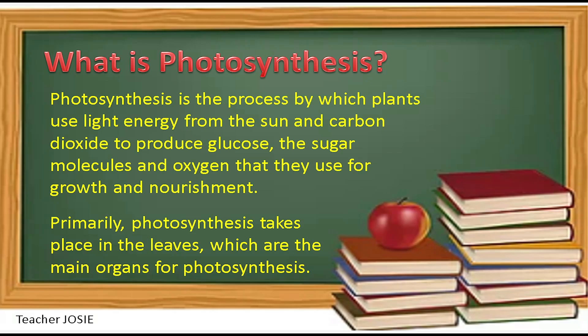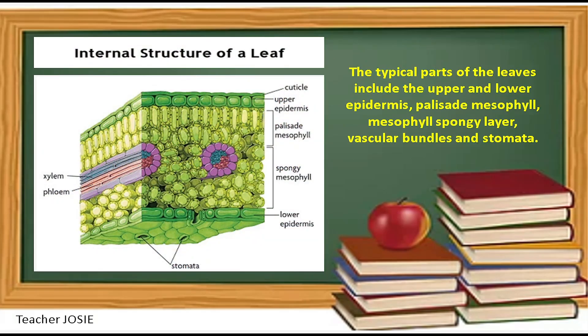Photosynthesis produces sugar molecules and oxygen that plants use for growth and nourishment. Primarily, photosynthesis takes place in the leaves, which are the main organs for photosynthesis. The typical parts of the leaves include the upper and lower epidermis, palisade mesophyll, mesophyll spongy layer, vascular bundles, and stomata.